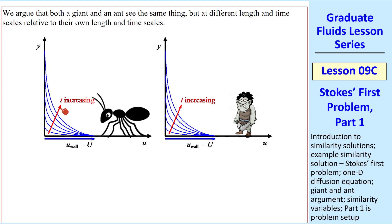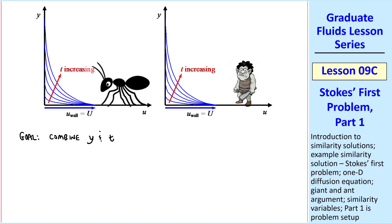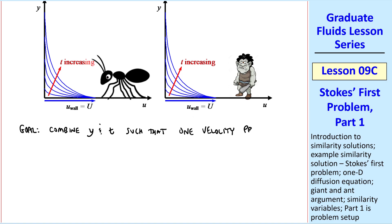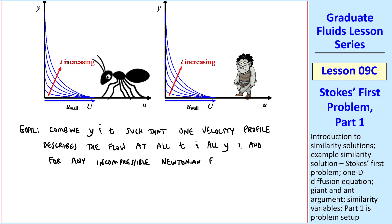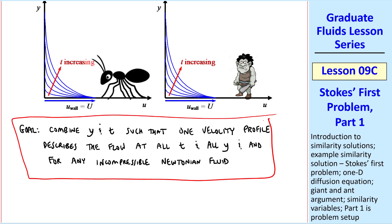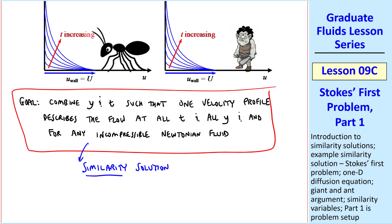But if we come up with a proper similarity solution and scale appropriately, they both see the same thing. Our goal is to combine y and t such that one velocity profile describes the flow at all times and all y, and for any incompressible Newtonian fluid. You can think of it as stretching the profile appropriately with size and time so that one profile describes any time and any y location. Mathematically, we'll combine t and y into one variable, reducing the number of independent variables here from two to one.